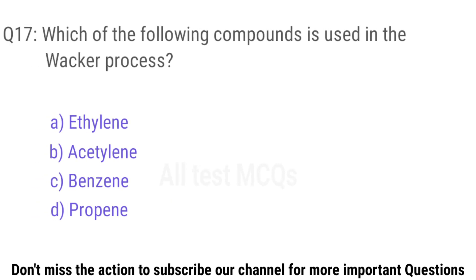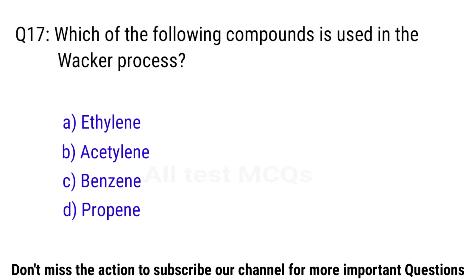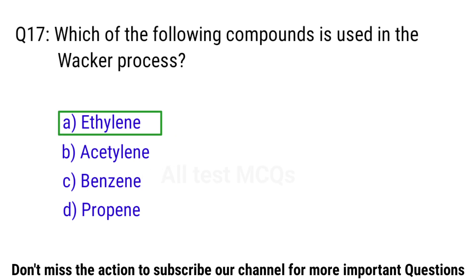Q17. Which of the following compounds is used in the Wacker process? The right answer is option A. Ethylene.